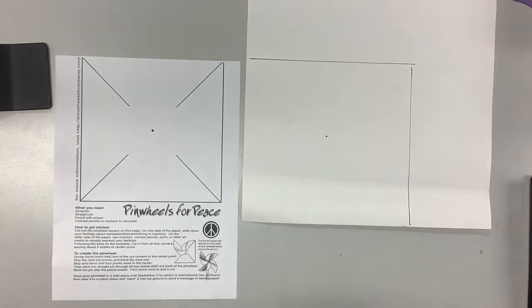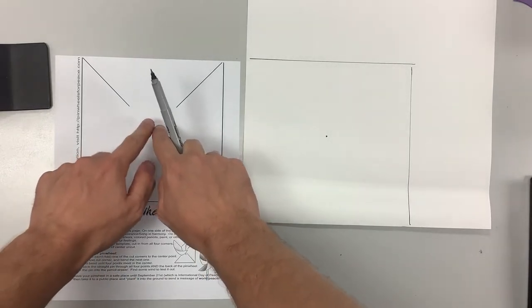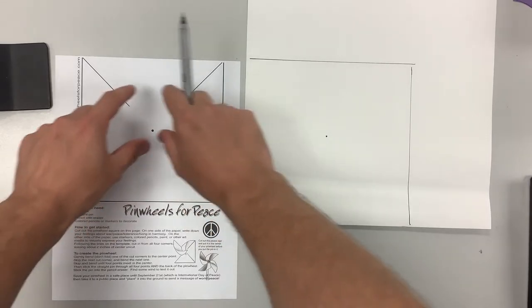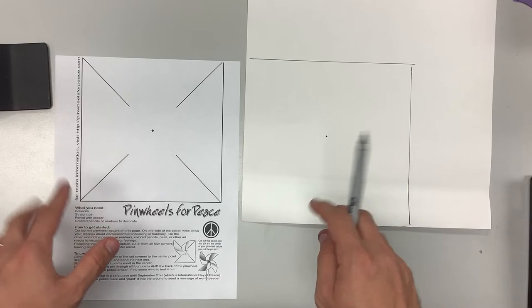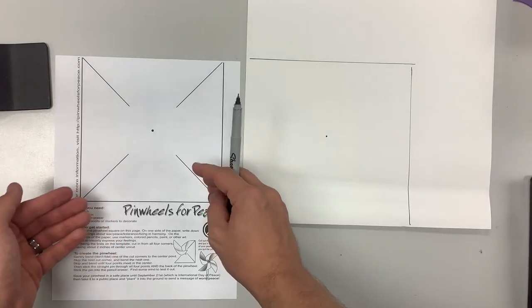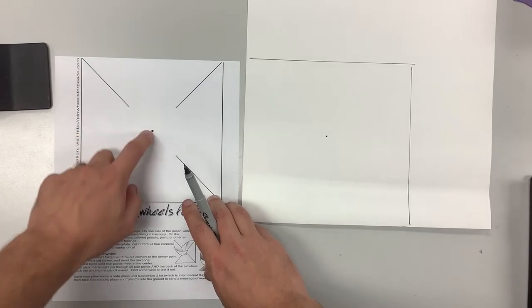They go from the corners and they go to the dot. Notice how the diagonal lines go towards the dot, but not all the way. There's a little bit of empty space in between the lines and the dot. You don't want to cut on the line and go all the way to the dot because then the flaps of the pinwheel will fall off.